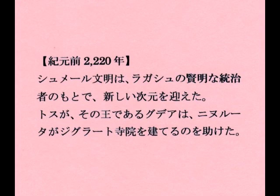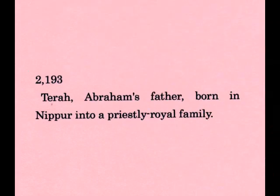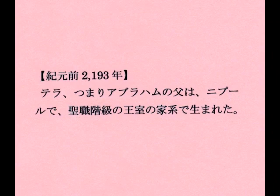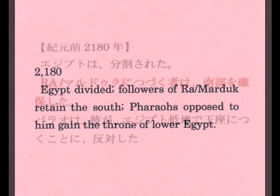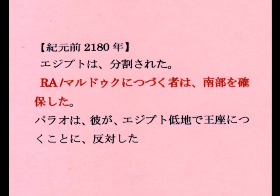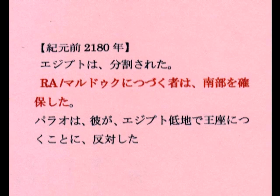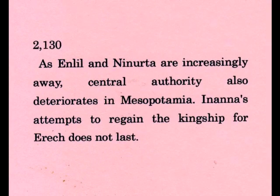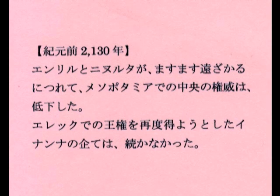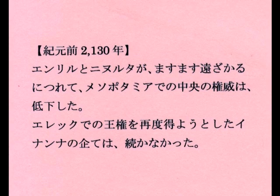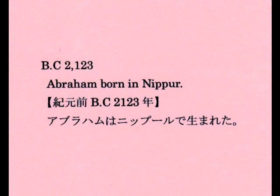この地球年代記を通して今読み取れることではないかと思います。アヌはですね、地上にあった拠点を核で攻撃して破壊したと、そういうようなことまで書いてあります。